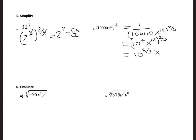So this gives 10 to power 8 over 3, and x to power 12 times 2 is 24, divided by 3 gives 8. Since 8 over 3 is a fraction — 2 and 2 thirds — I can break 10 to power 8 over 3 into 10 squared multiplied by 10 to power two-thirds, and then x to power 8.